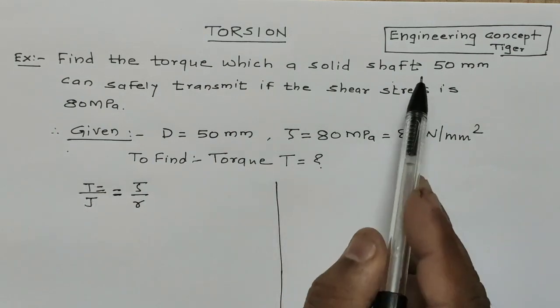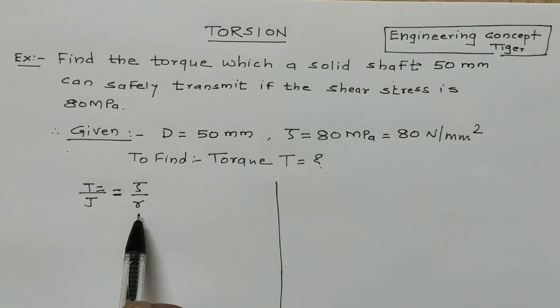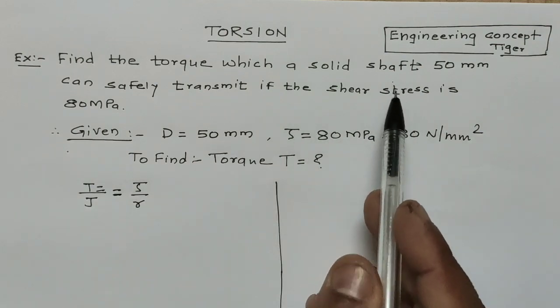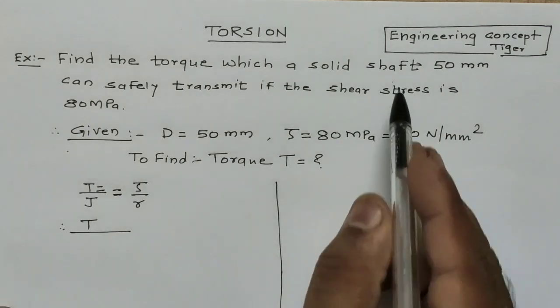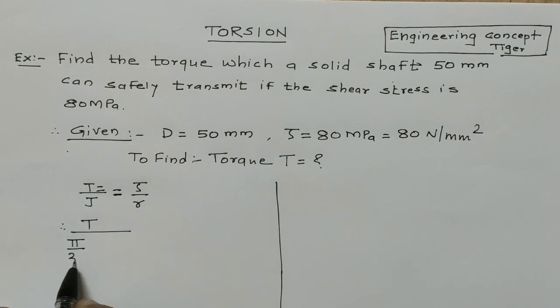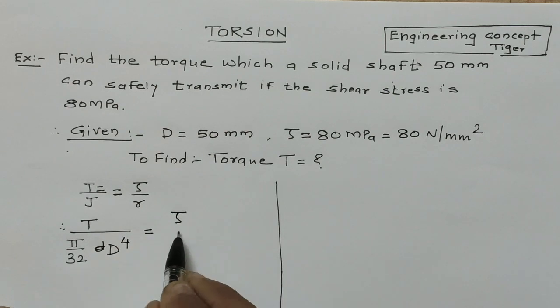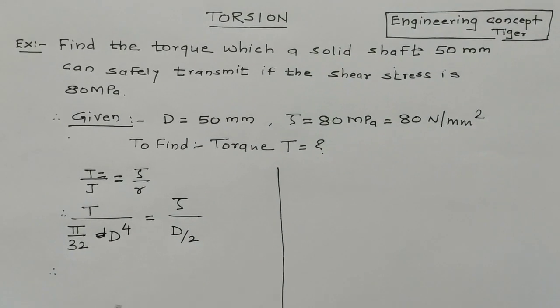In that, T is unknown. J we can calculate using the diameter of the shaft. τ is given and R is the radius of the shaft. Therefore, T upon J, where J is the polar moment for a circular shaft and that is π/32 D⁴, is equal to τ upon R, which is D/2.